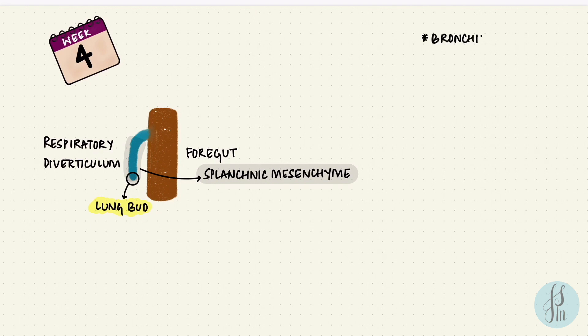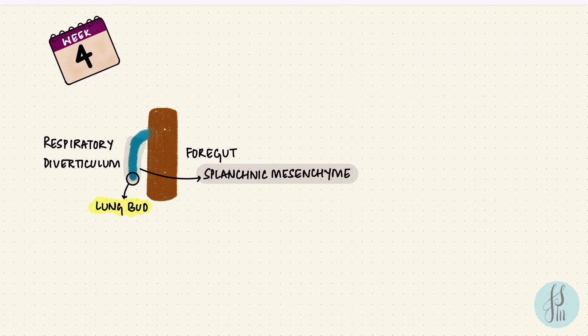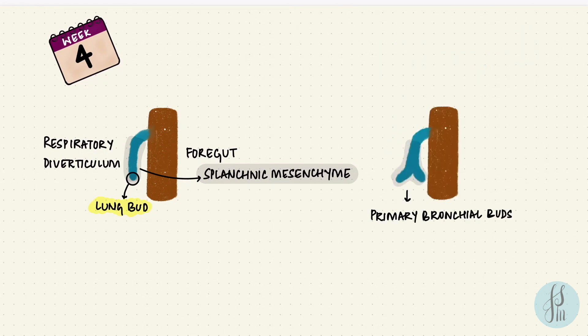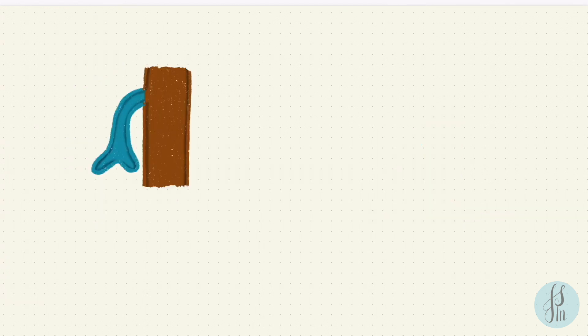The bronchial buds form bronchi and the bronchiolar buds form bronchioles. From the lung bud arise the right and left primary bronchial buds. At this point, the trachea and the gut tube — which is going to form the esophagus — are currently connected, and that has to close.